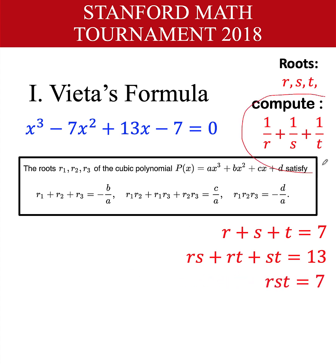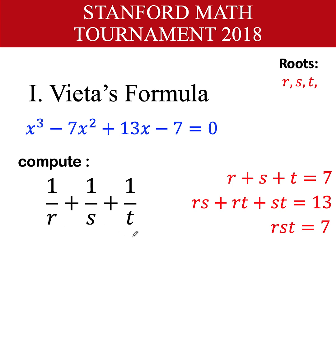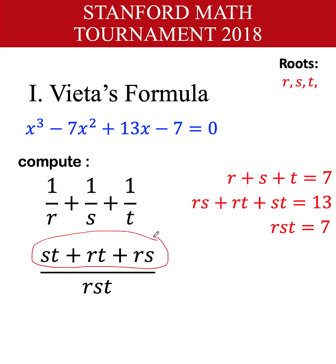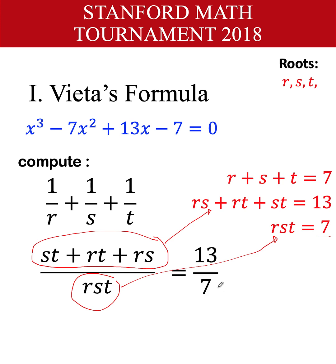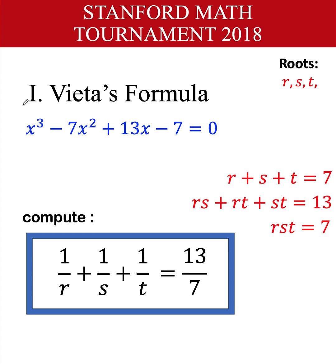Our goal is to compute 1 over r plus 1 over s plus 1 over t. Simplifying with the LCD of rst: this becomes st plus rt plus rs all over rst. Notice that st plus rt plus rs equals 13, and rst equals 7. Therefore, 1 over r plus 1 over s plus 1 over t equals 13 over 7. This is the final answer using Vieta's formula.